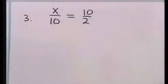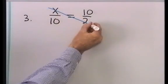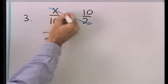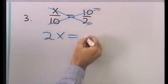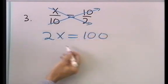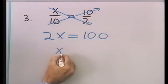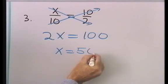Here's another problem. x over 10 is equal to 10 over 2. I'll multiply x times 2. That will be 2x. And then I'll multiply 10 times 10, and that will be 100. Divide both sides by 2, and I get x is equal to 50.